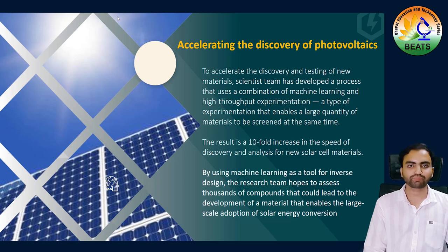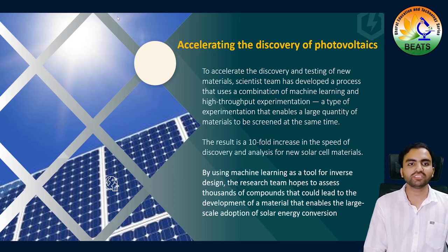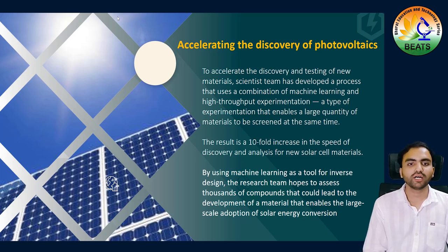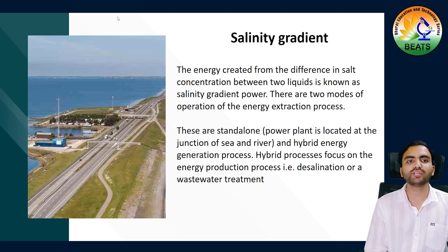Next, accelerating the discovery of photovoltaics — photovoltaics is what you use in solar panels, which is the main purpose of solar energy. We can accelerate the trapping of energy by using new materials. A team of scientists made many combinations of materials and developed a new material, resulting in a 10-fold increased speed of grasping solar energy using machine learning. As you all know, artificial intelligence is playing a role in each industry. They experimented with large quantities of different materials so that maximum energy can be stored.